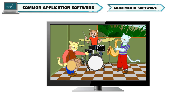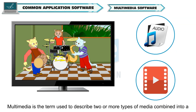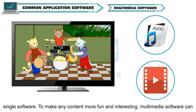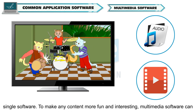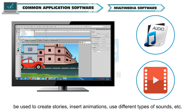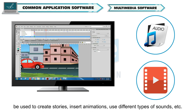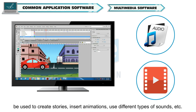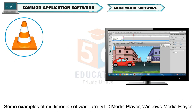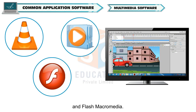Multimedia software. Multimedia is the term used to describe two or more types of media combined into a single software. To make any content more fun and interesting, multimedia software can be used to create stories, insert animations, use different types of sounds, etc. Some examples of multimedia software are VLC Media Player, Windows Media Player, and Flash Macromedia.